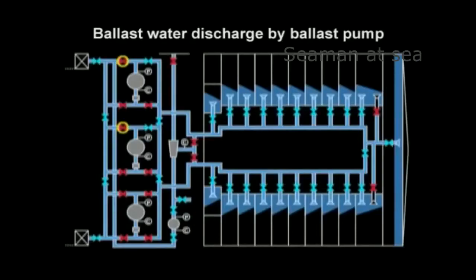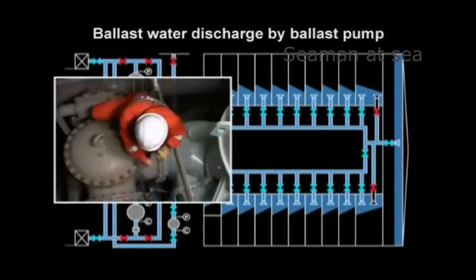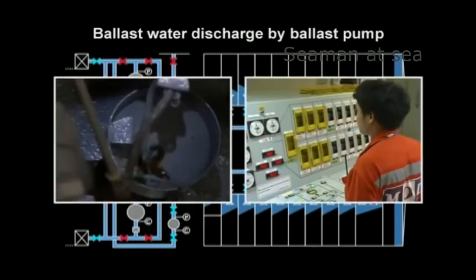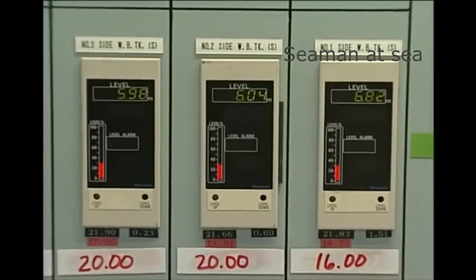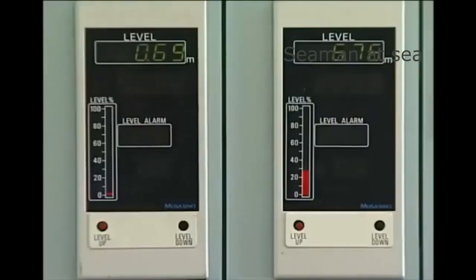Next, we'll proceed to ballast water discharge by ballast pump. The ballast pump starting procedures are the same as for filling. Make sure to conduct air purging from the pump and confirm the state of valves and gauges. Watch the water level since cavitation occurs as the level drops, which causes the water head pressure from the pump's suction valves to decline. As the water level drops further to approach the tank bottom, exercise precautions against air drawing. Watch the gauge carefully and readily respond to the risk of air drawing.